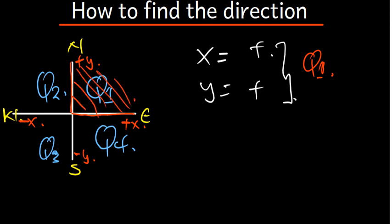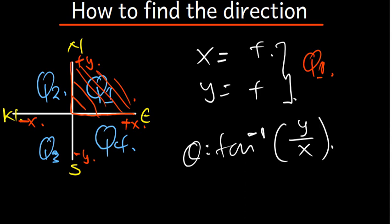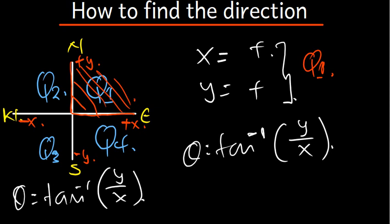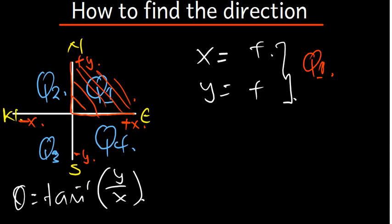That angle is going to be in the first quadrant. After using the formula — theta equals tan inverse of y divided by x — after plugging in the values, what we have to understand is that that angle falls in the first quadrant. After finding theta, that theta is going to be the answer.